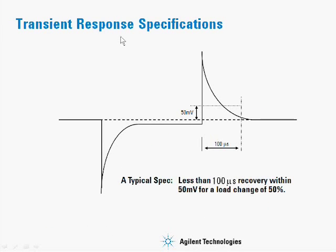Let's talk about transient response specifications. Power supplies, since they're active, have some overshoot and undershoot associated with them, since the loops don't have infinite bandwidth. We specify a power supply both for the time it takes to recover and the amplitude it has to recover to. A typical spec would be less than 100 microseconds to recover to within 50 millivolts for a 50% load change. We have two boundaries: 50 millivolts and 100 microseconds. As long as the power supply is back within that limit before the time is up, it's meeting its spec.